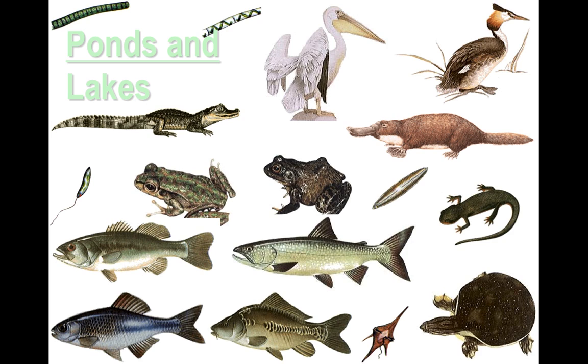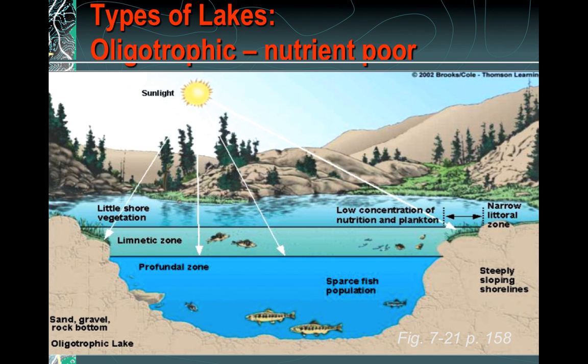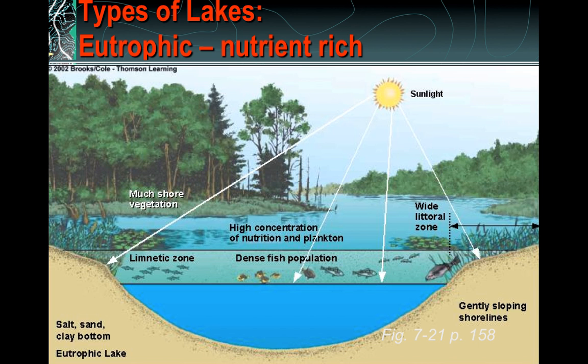These are types of fauna found in ponds and lakes, and we have different kinds of lakes. An oligotrophic lake is nutrient-poor with limited vegetation and life — basically a brand new lake or pond. A eutrophic lake is nutrient-rich and well-established, with lots of vegetation on the edges and a high, dense fish population.